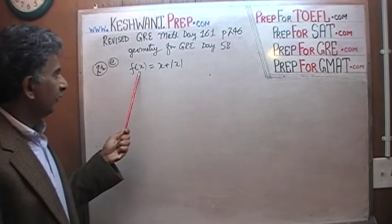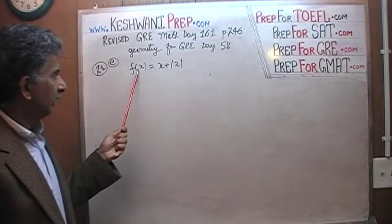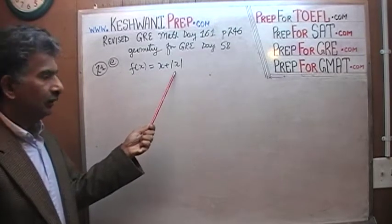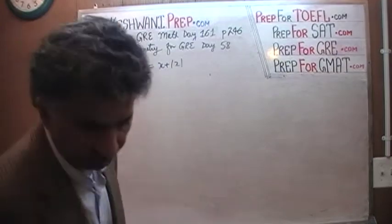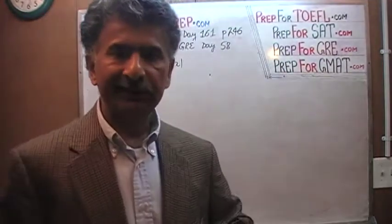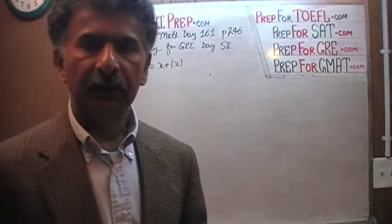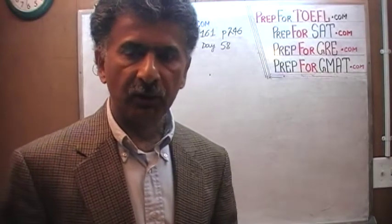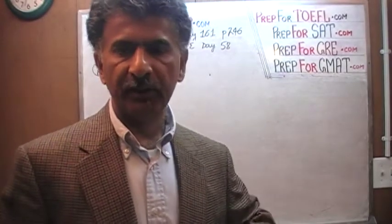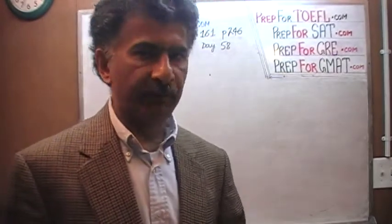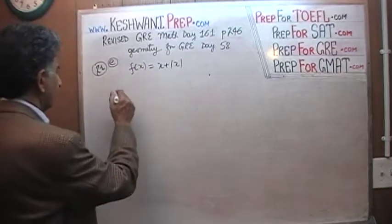Here is the function that is given to us. We are told that f(x) equals x plus the absolute value of x. The easiest and simplest way to understand this function — what is going on here — is to just plug in different values of x and see what happens. So that's what we are going to do.